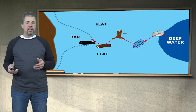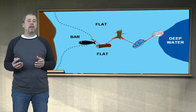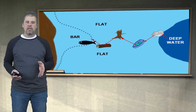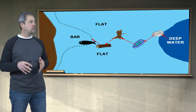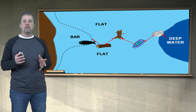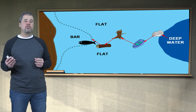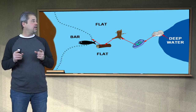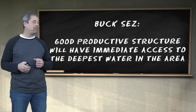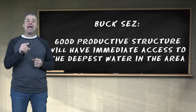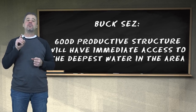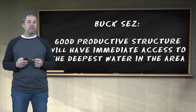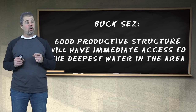Now that shoreline bar may be productive. I've heard it happen quite often — you've got a bar that's productive year after year, then one year you go there and find it isn't productive anymore. More than likely, a stump rotted away or broke off, and now there's nothing to lead the fish across that flat. That bar becomes a dead end — no longer used by the school of adult fish. This is one of Buck's most important points: good productive structure will have immediate access to the deepest water in the area. Period.